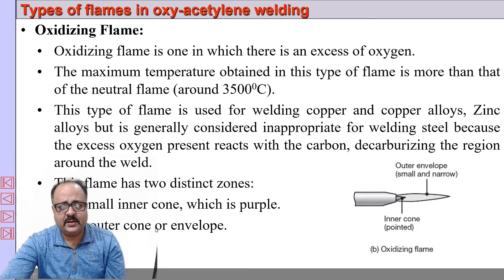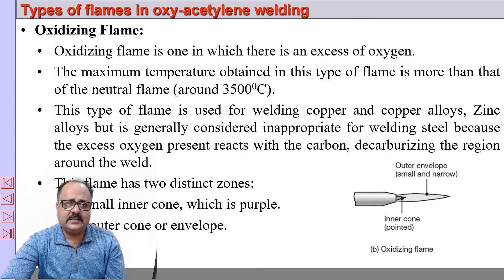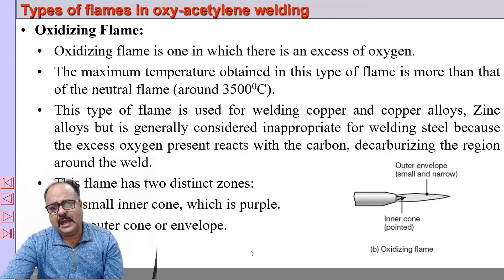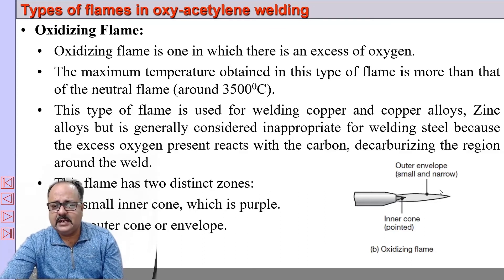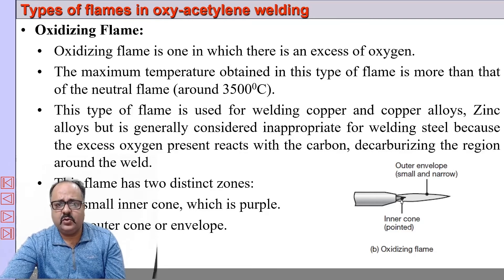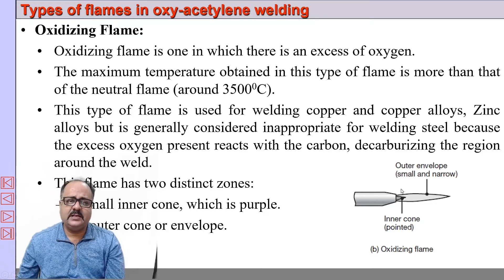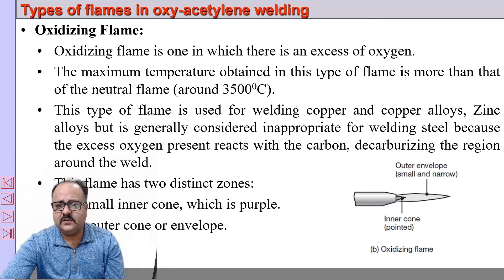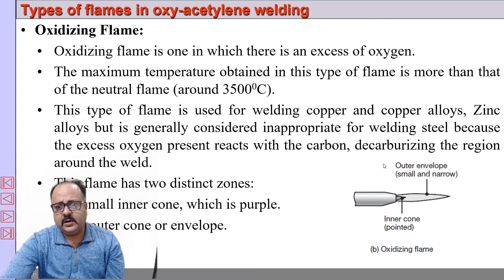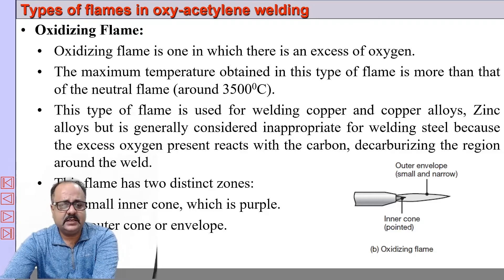In an oxidizing flame, the amount of oxygen is greater than the amount of acetylene. It has two zones: a small inner cone, which is purple in color, and an outer envelope. The temperature is slightly higher, around 3500 degrees centigrade, but it is not suitable for welding steel because oxygen will react with the steel and form oxides. Therefore, oxidizing flame is used for welding copper, copper alloys, zinc, and zinc alloys.